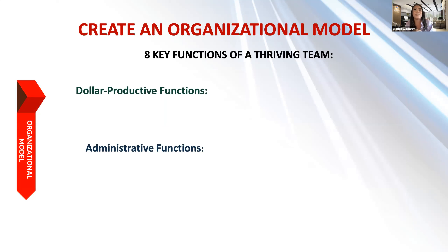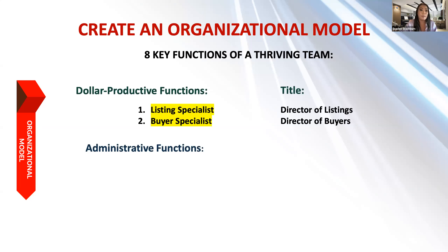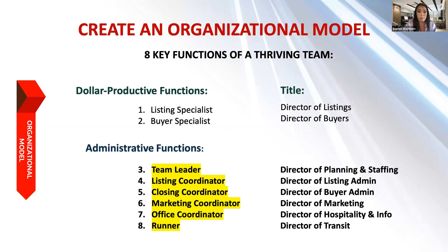Now the organizational model. There are eight key functions of a thriving team broken into two groups: dollar productive functions — listing and buyer specialists (titled Director of Listings and Director of Buyers) — and administrative functions: team leader, listing coordinator, closing, marketing, and office coordinators, and a runner. A complete team will fill each of these eight functions to become thriving. We'll touch on this more in the staffing section.